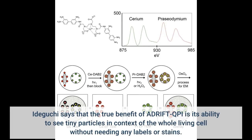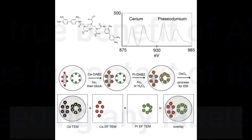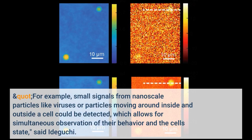Idiguchi says that the true benefit of Adrift QPI is its ability to see tiny particles in the context of the whole living cell without needing any labels or stains. For example, small signals from nanoscale particles like viruses or particles moving around inside and outside a cell could be detected, which allows for simultaneous observation of their behavior and the cell state, said Idiguchi.